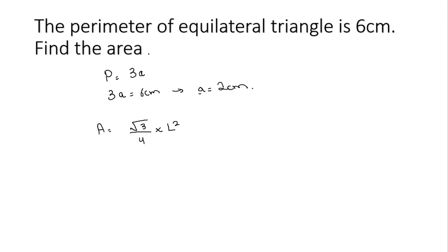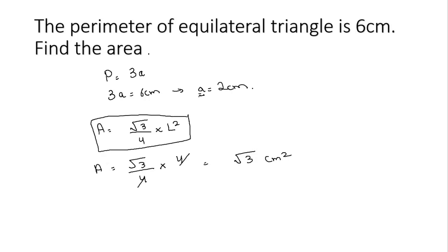The length of each side is a, and here a is 2 cm. So we put in: root 3 over 4, multiplied by the square of 2 which is 4. The area comes out to be root 3 cm squared. Remember the formula: area of equilateral triangle is root 3 over 4 multiplied by L squared, where L is the length of any side. The perimeter is the sum of the lengths of all the sides.